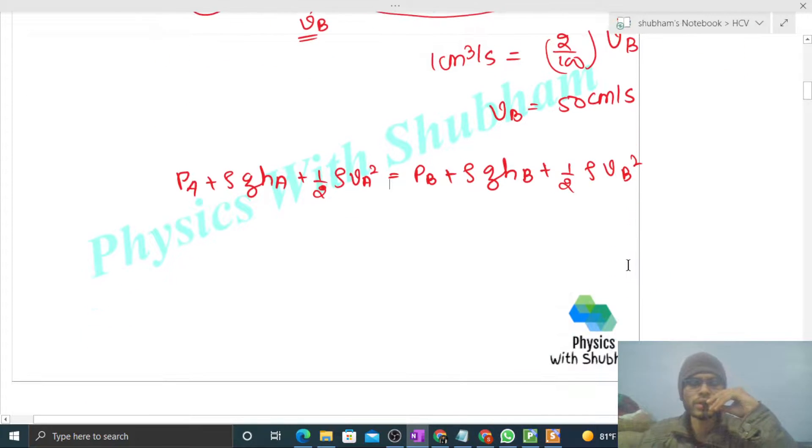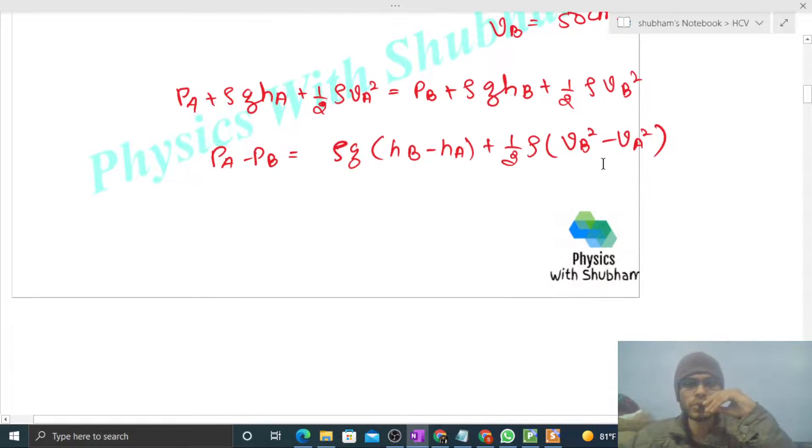Now what you have to find out is pA minus pB. So that will be rho g times (hB minus hA) plus half rho times (vB squared minus vA squared). Now you can just put the values.